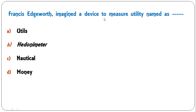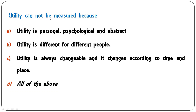...utils, hedonometer, nautical, or money? Edgeworth imagined a device and named it hedonometer, which is derived from hedonism, meaning the pursuit of pleasure. B is the correct answer. Next: 'Utility cannot be measured because' — utility is personal, psychological and abstract; utility is different for different people; utility is always changeable according to time and place; or all of the above? The correct answer is D: all of the above are the reasons.